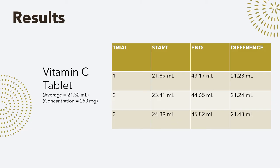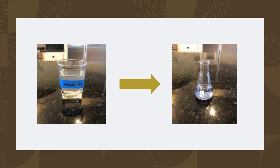I'm going to get into the results for each of my trials. I did three trials for one vitamin C tablet. On average it took 21.32 milliliters to titrate it, and it contained 250 milligrams of vitamin C — that was a given. The vitamin C tablet started off as a cloudy white color and then turned into a dark blue color once it was titrated.